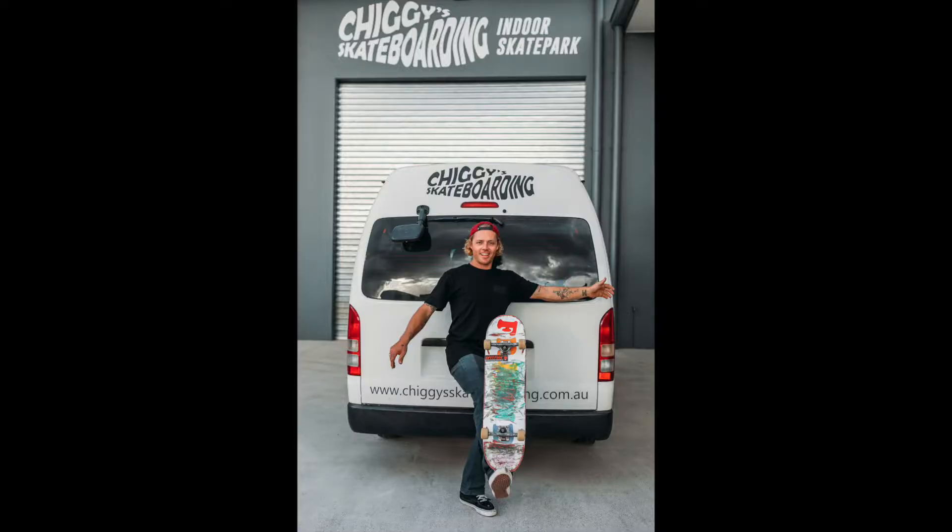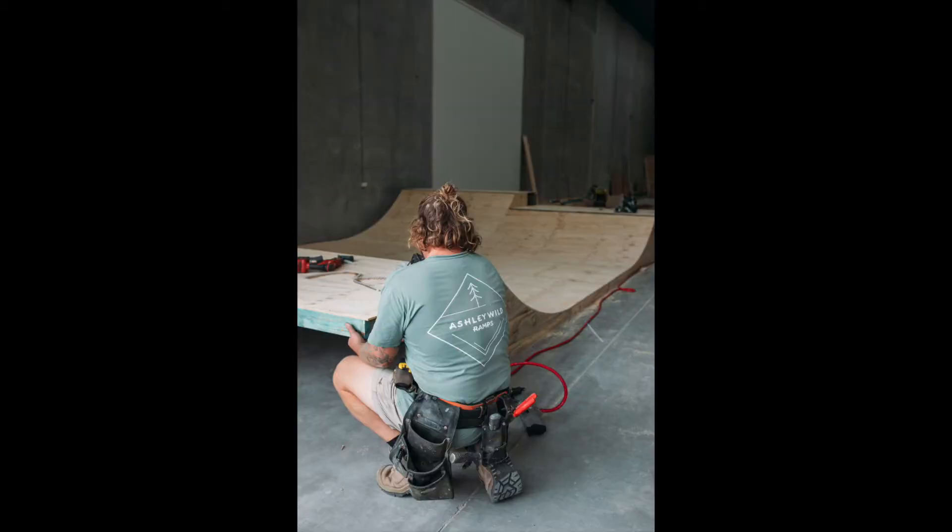In tutorial one, we met Chiggy. Here he is balancing his skateboard on his toe. He built his own skate park with the help of his friends from Ashley Wild Ramps.